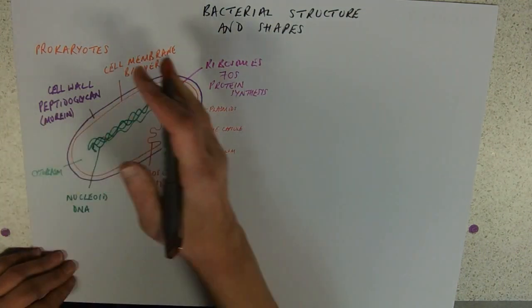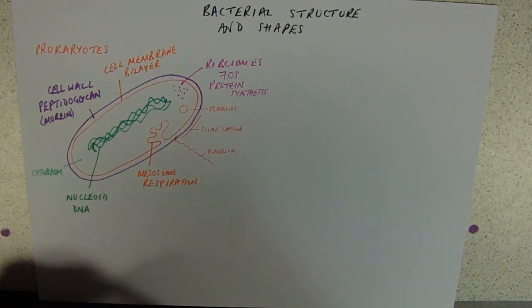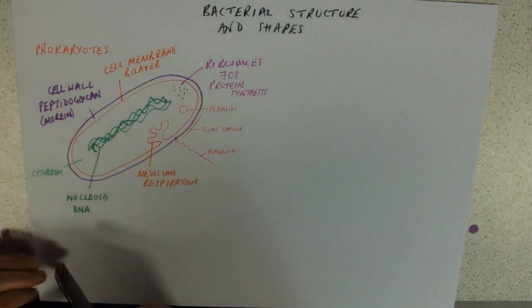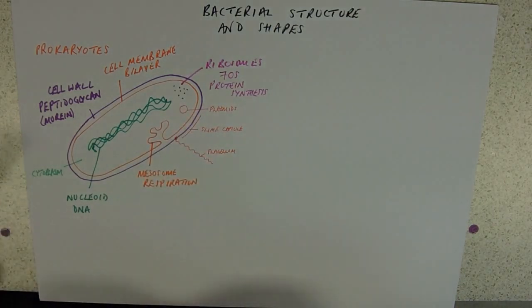But those are not universal features. All bacteria have the ones that I've done in felt tip. And then these are optional extras. And, of course, in Unit 2 we were very obsessed with these plasmids which we're using now in the world because we know more about stuff we're using them in genetic engineering.